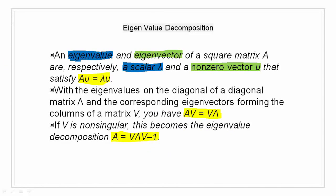In this case, we have an eigenvalue decomposition. An eigenvalue and eigenvector of a square matrix A are respectively a scalar lambda and a non-zero vector u that satisfy the equation highlighted in yellow. That is, Au equals lambda u. With the eigenvalues on the diagonal of matrix delta and the corresponding eigenvectors forming the column of matrix V, you have Av equals V delta.